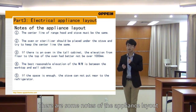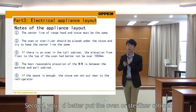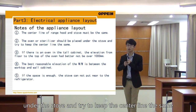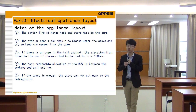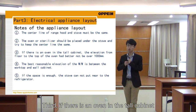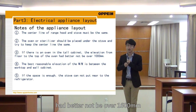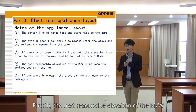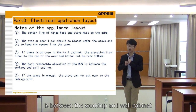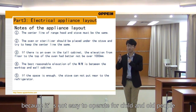There are some notes on appliance layout. First, the center line of range hood and stove must be the same. Second, you'd better put the oven or sterilizer cabinet under the stove and try to keep the center line the same, so that it will be centralized and good looking. Third, if there is an oven in the top cabinet, the elevation from floor to the top of the oven had better not exceed 1.6 meters, so that the customer can put in or take out food easily. Fourth, the best reasonable elevation of microwave oven is between the worktop and the top cabinet. It's not suggested to put it in the base cabinet or wall cabinet because it's not easy to operate for children and elderly people.